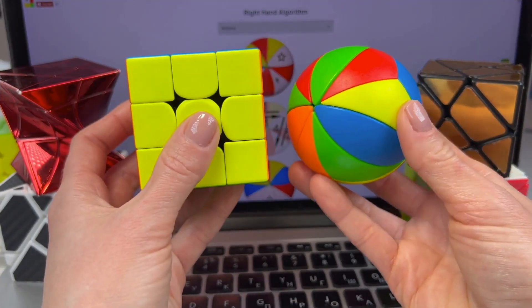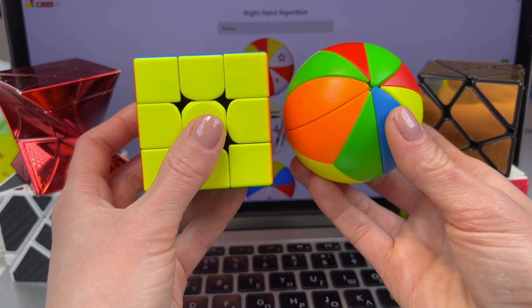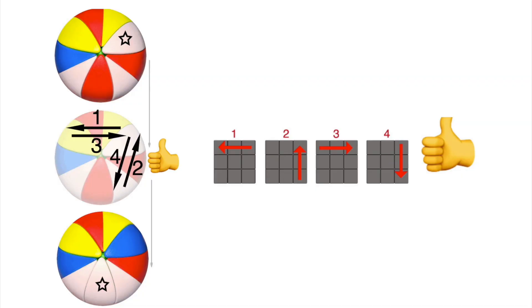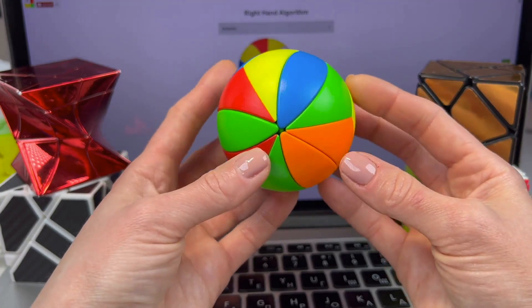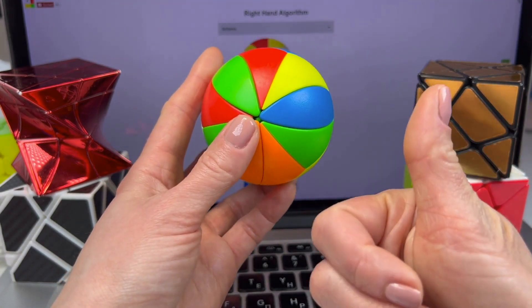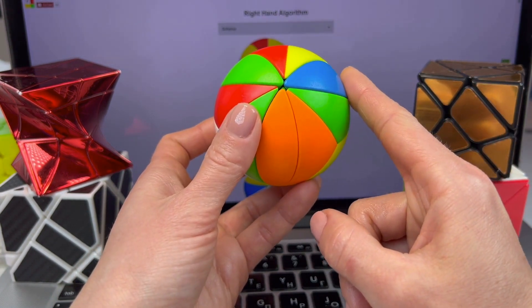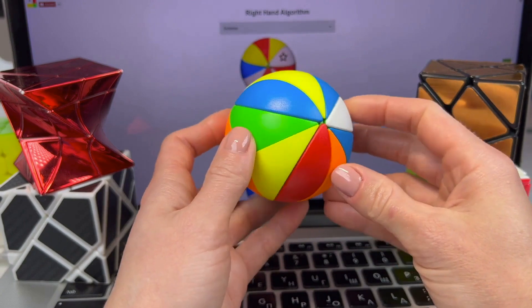Just like with the Rubik's Cube, in this puzzle, we use the right-hand and left-hand algorithm. These are very simple algorithms that consist of four moves. And in most cases for this puzzle, we will mainly use the right-hand algorithm. And only in one situation will we need to use the left-hand algorithm.